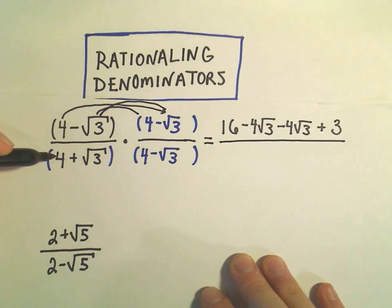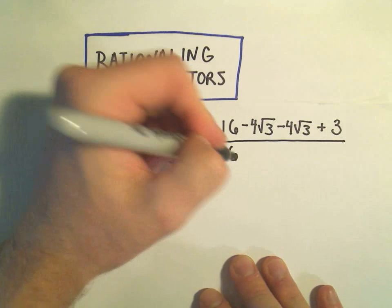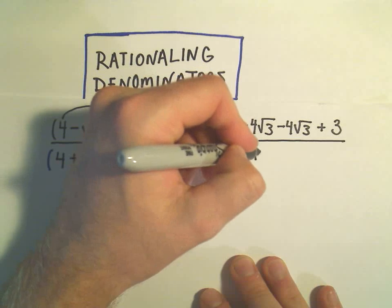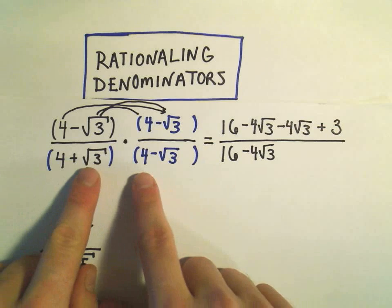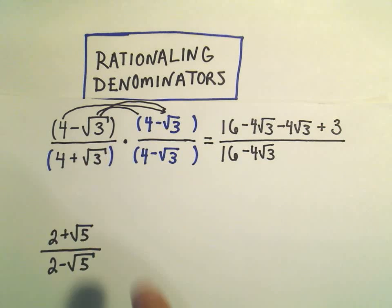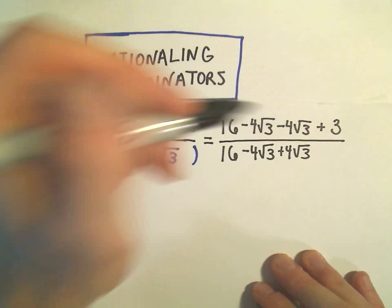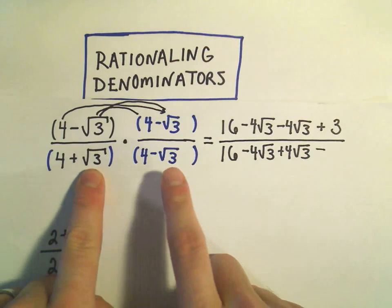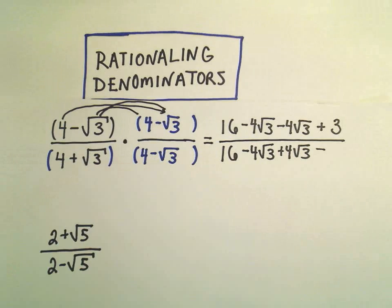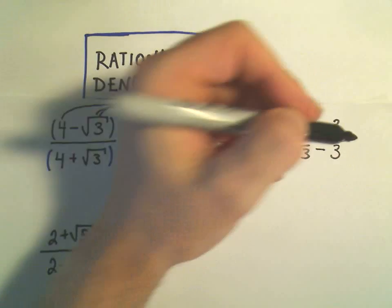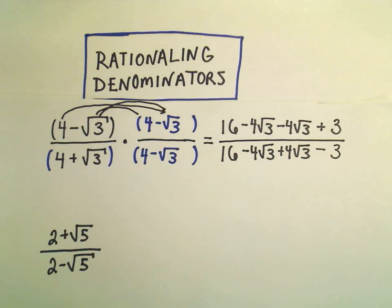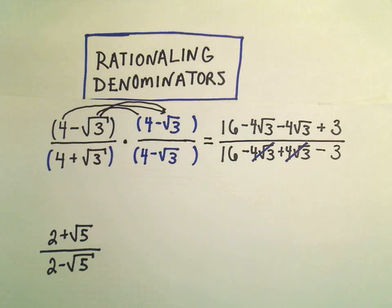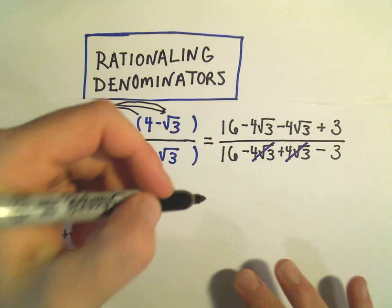And in the denominator, we'll do the same thing. 4 and 4 is 16. We would have 4 times negative root 3, which would be minus 4 square root of 3. On the inside, we'll have a positive 4 square root of 3 when we multiply. And then our outside terms, we'll get a positive times a negative, which is a negative. The square root of 3 times the square root of 3 just leaves us with 3. Notice in the denominator, we can cancel out the negative 4 root 3 and the positive 4 root 3.